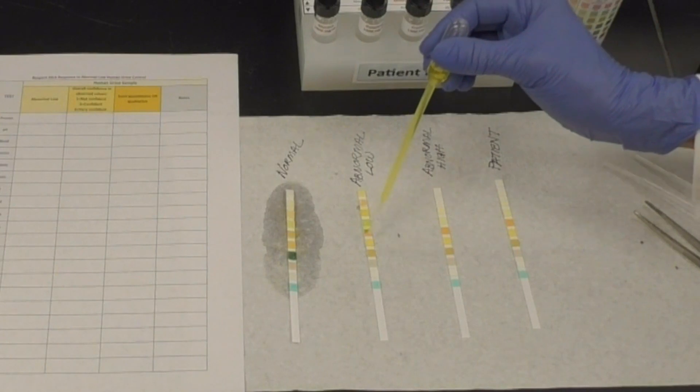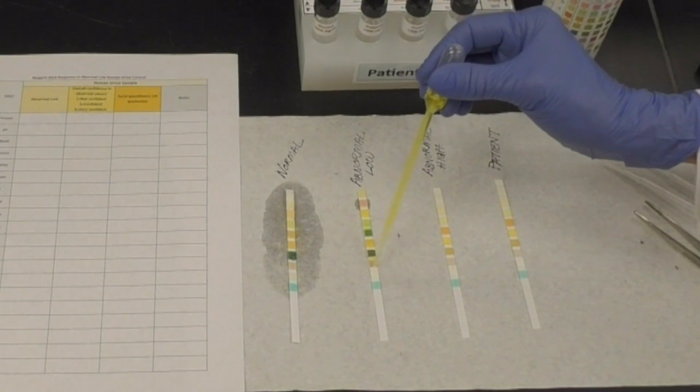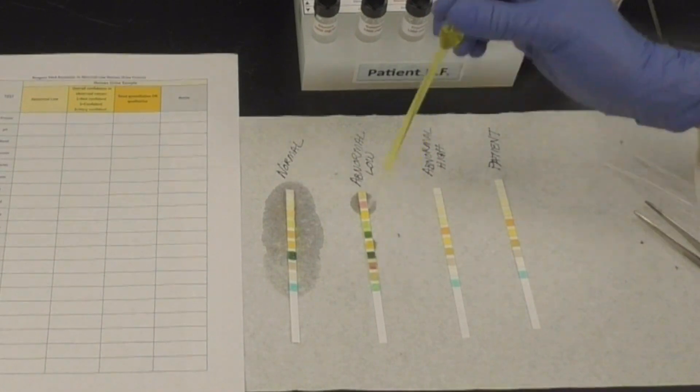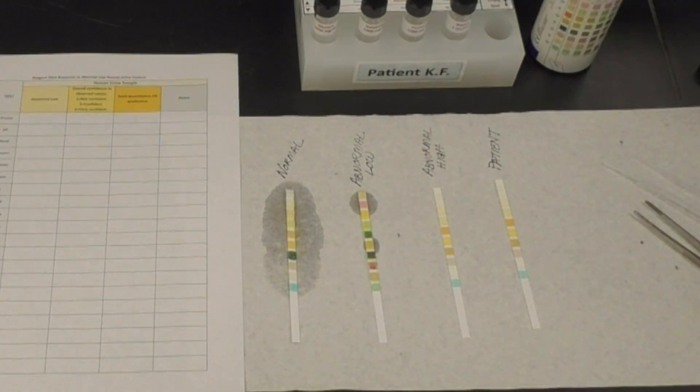To run the sample, use a fresh transfer pipette. Place one drop on a pad. If you are comfortable, you can try spotting all the pads on a strip at once. Otherwise, spot just the test you are interested in. Read the results at the appropriate times indicated on the charts provided.